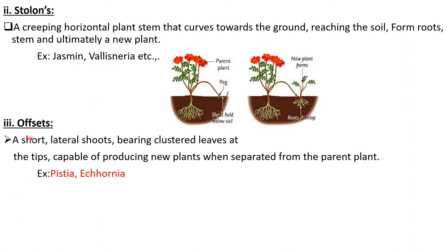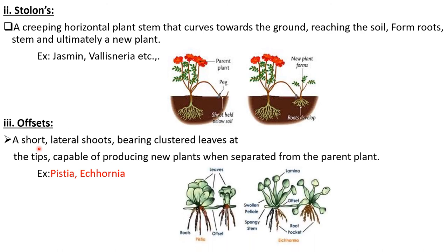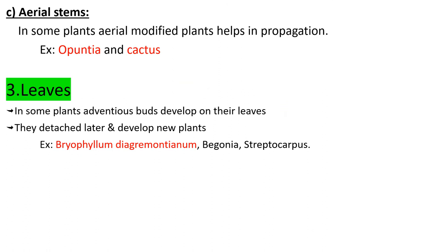The fourth type of creeping stem is offsets, which we can observe in aquatic plants. A short lateral shoot bearing clustered leaves at the tips, capable of producing new plants when separated from the parent plant. The examples are Pistia and Eichhornia. In these two pictures, there is a long slender part called offset, with nodes and a cluster of leaves at the tips and roots at the base. When this offset breaks, the remaining portion is capable of giving rise to a new plant.